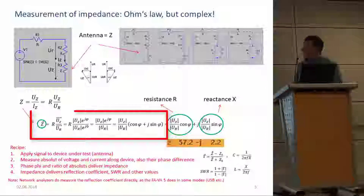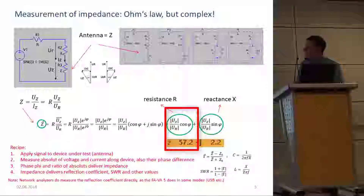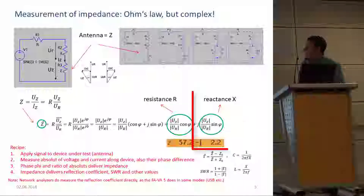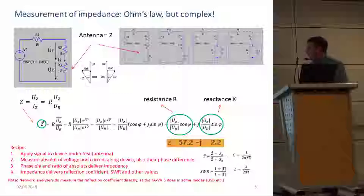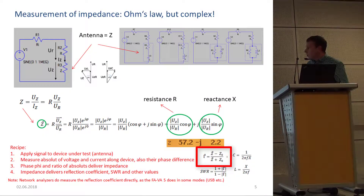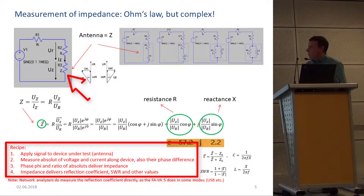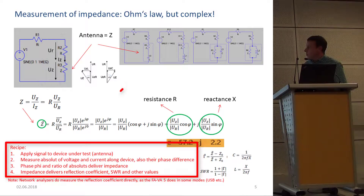It involves complex mathematics, but at the end it reduces to one equation: we just have to measure the absolute value ratio of the two voltages and multiply it with the cosine of the phase difference to get the resistance, and with the sine of the phase difference to get the reactance, which can be capacitive or inductive. From these numbers we can calculate everything else: the capacitance and inductance of the equivalent circuit, the reflection coefficient, and the standing wave ratio. The recipe is simply to apply a signal, measure two voltages, get their absolute ratio, measure the phase difference — and then we are done.